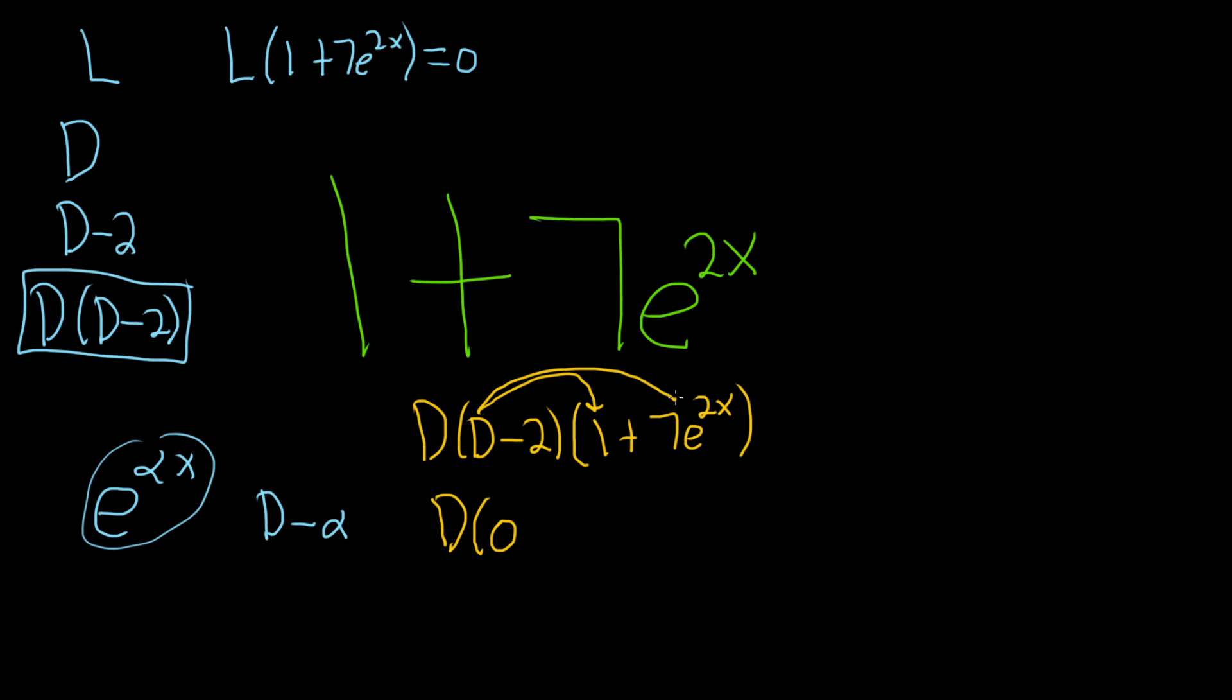D applied to this piece means we take the derivative of 7 times e to the 2x. That's just going to be 7e to the 2x times the derivative of the inside. The inside function is 2x, and its derivative is 2, just the chain rule.